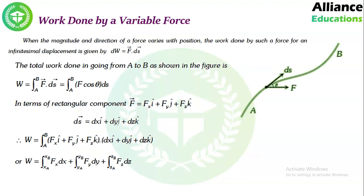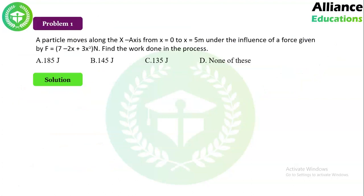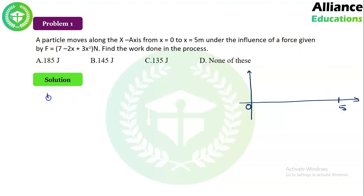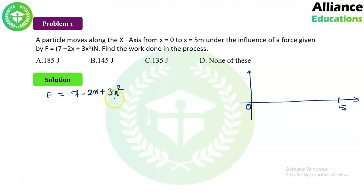Your notes are available for reference. Now let's solve questions based on these concepts. First question: a particle moves along the x-axis from x=0 to x=5, under the influence of force F = 7 − 2x + 3x². You can see that force is a function of x, so as x varies, force also varies — this is a variable force.